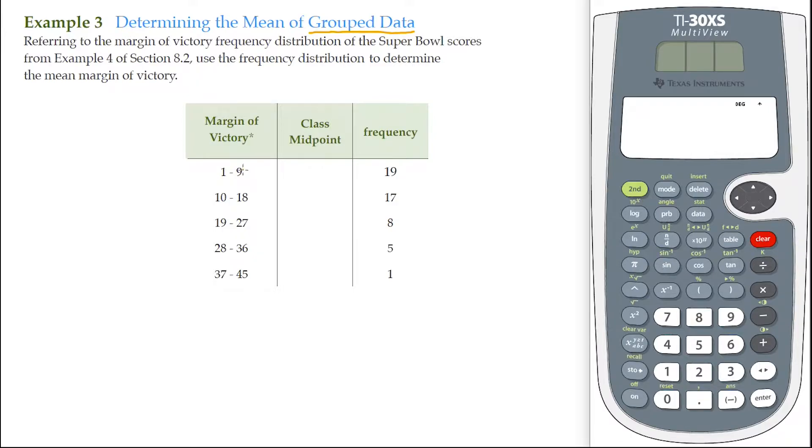So we have these five groups here, which we determined were classes. This class, another class, and so on. And that's our grouped data. We know from the margin of victory between 1 and 9 points, there were 19 Super Bowls that had a margin of victory between 1 and 9 points. There were 17 Super Bowls that had a margin of victory between 10 and 18 points, and so on. We also did a corresponding histogram for this particular frequency distribution. But now we want to determine what is the average margin of victory. And we want to determine that average from our grouped data here, from our individual classes here.